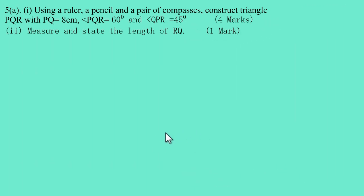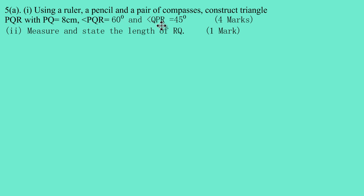Welcome back. In this video we're going to look at the solution to question 5a on the May 2012 CSEC math exam past paper. They have stated: using a ruler, pencil, and a pair of compasses, construct triangle PQR with PQ equal to 8 centimeters, angle PQR equal to 60 degrees, and angle QPR equal to 45 degrees — that's 4 marks. Part two asks us to measure and state the length of RQ, worth 1 mark.